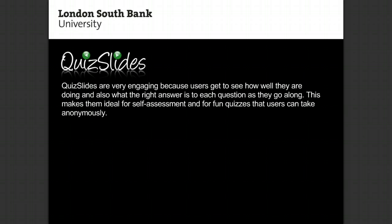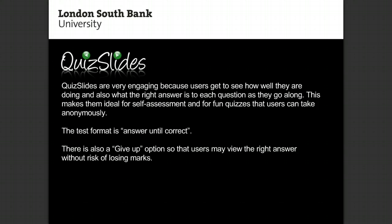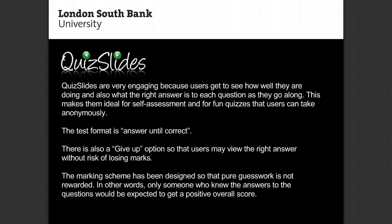You may choose to create Quiz Slides. Quiz Slides are very engaging because users get to see how well they are doing and what the right answer is to each question as they go along. This makes them ideal for self-assessment and for fun quizzes that users can take anonymously. The test format is answer-until-correct, meaning users can select options repeatedly until they get the right answer, but one mark is deducted each time a wrong answer is selected.